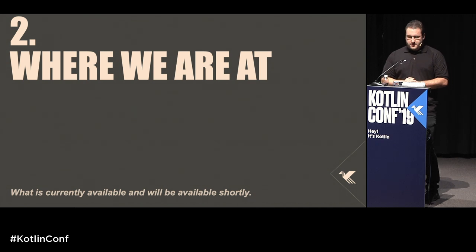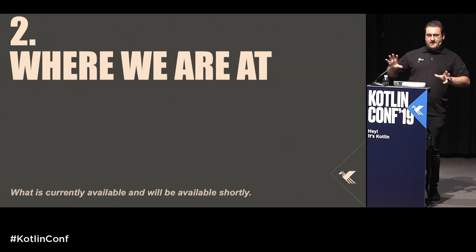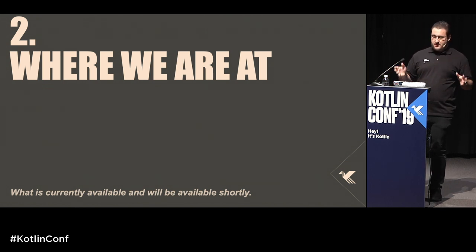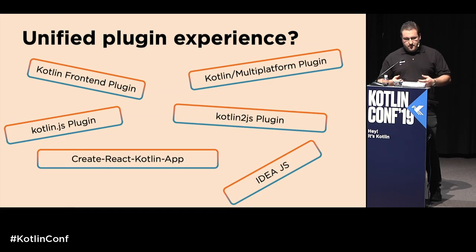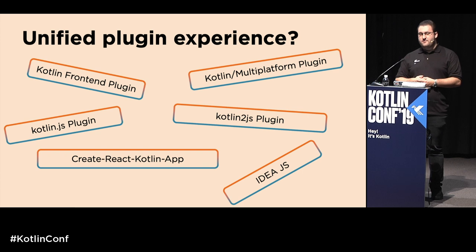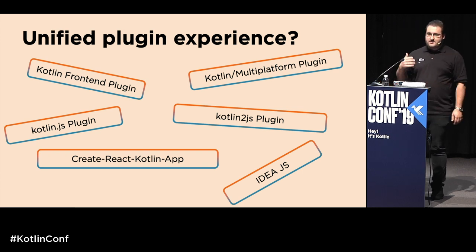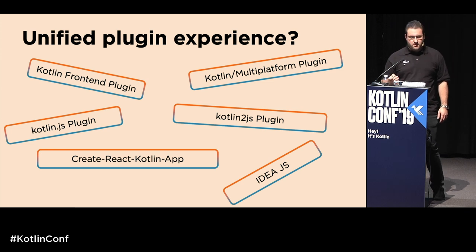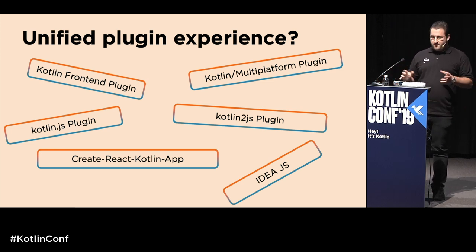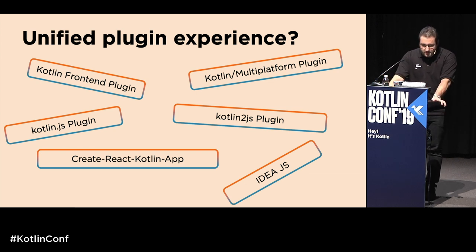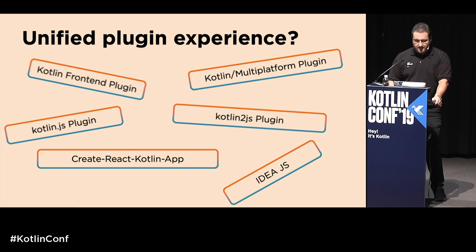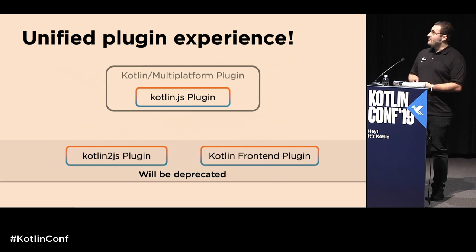Where are we right now with the JavaScript target? If you've tried Kotlin JS in the last couple of years, things weren't always super clear. It got confusing, especially when starting out — there were a ton of different approaches to target JavaScript through Kotlin, each with its own quirks and documentation, like the Kotlin-to-JS plugin and the front-end plugin. It wasn't clear how to get started.